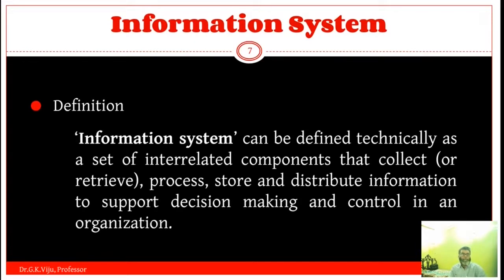An information system can be defined technically as a set of interrelated components that collects or retrieves, processes, stores and distributes information to support decision making and control in an organization.